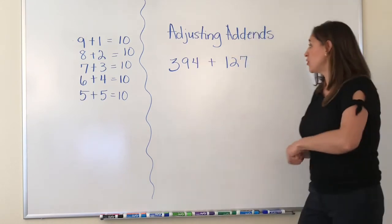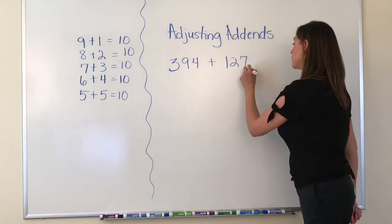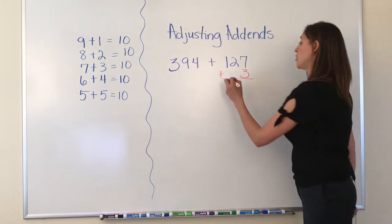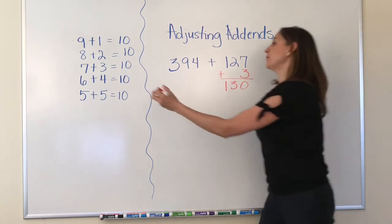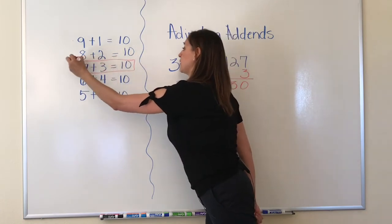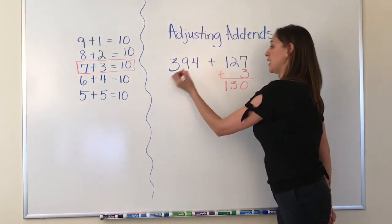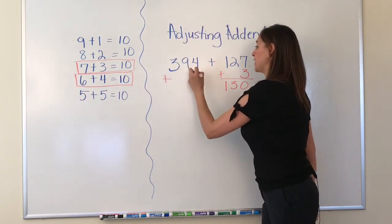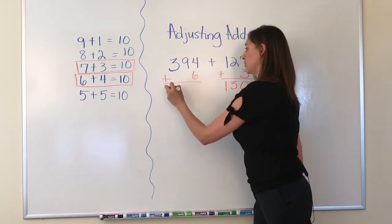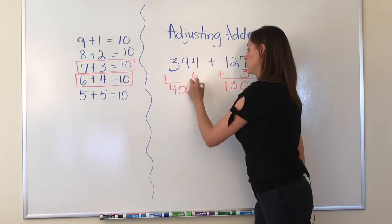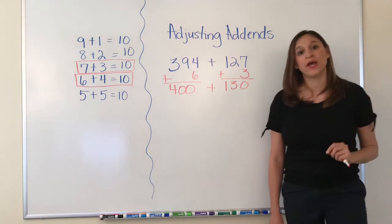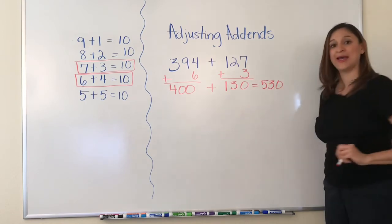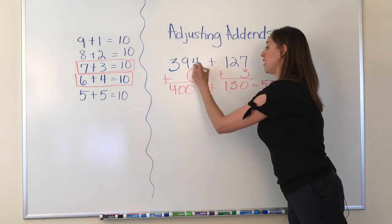So here I have 127. I know 7 plus 3 will help me convert this number into a friendly number - my number is 130. 394, if I adjust this addend I will add 6. I have 400.